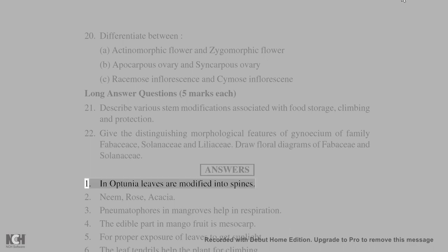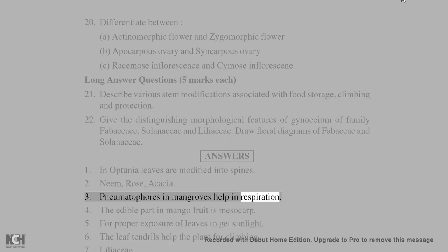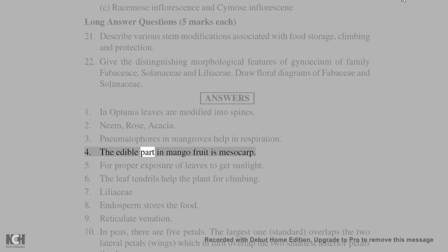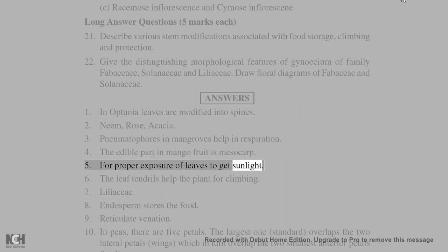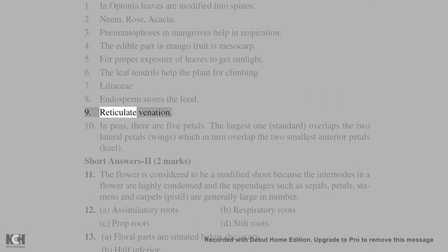Answers: 1. In opuntia, leaves are modified into spines. 2. Neem, rose, acacia. 3. Pneumatophores in mangroves help in respiration. 4. The edible part of mango fruit is the mesocarp. 5. For proper exposure of leaves to get sunlight. 6. The leaf tendrils help the plant for climbing. 7. Liliaceae. 8. Endosperm stores the food. 9. Reticulate venation.